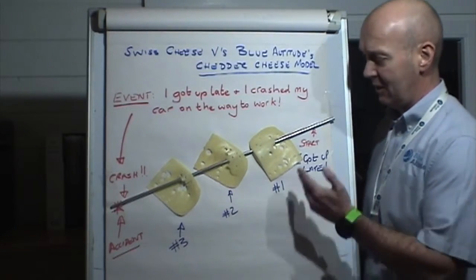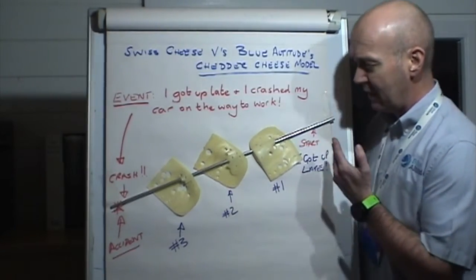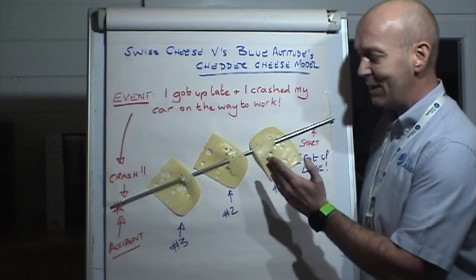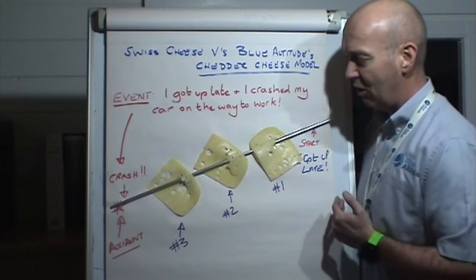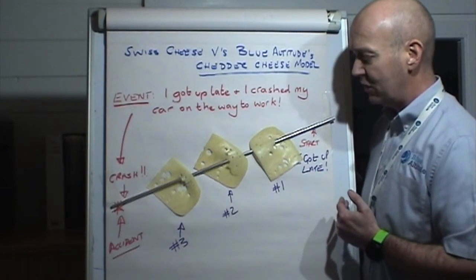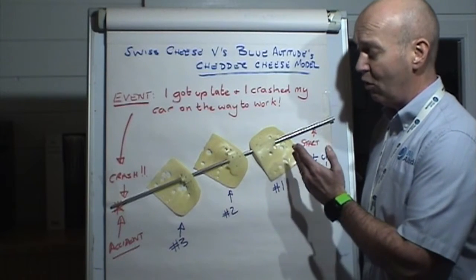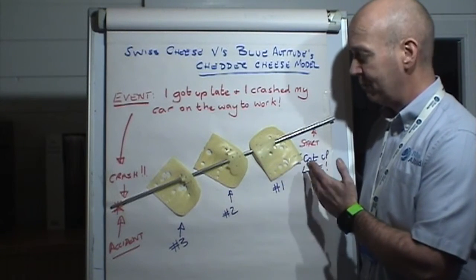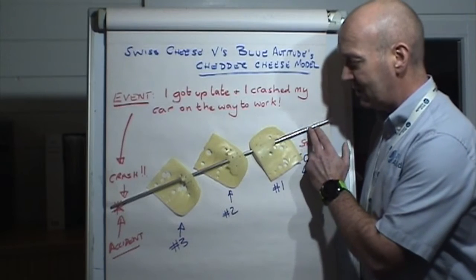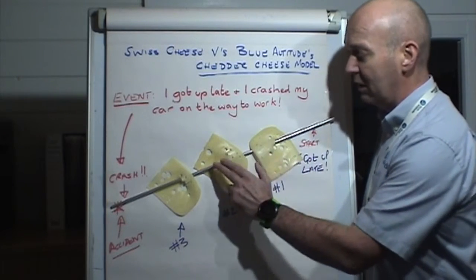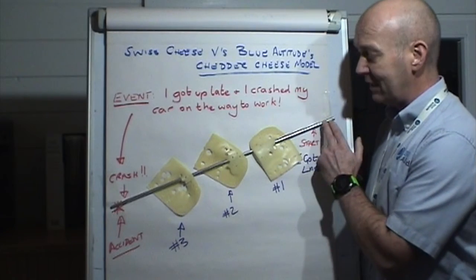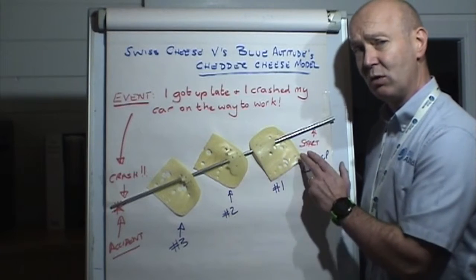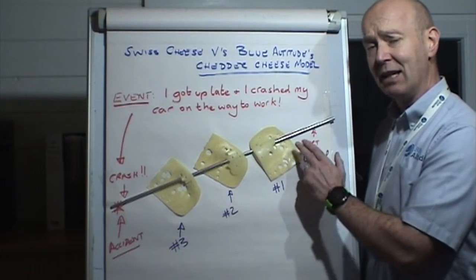If you look at the flip chart, you can see I've placed three pieces of Swiss cheese. Each piece has a hole in it. I'm using a steel pole to show that all the holes in each piece of Swiss cheese have been aligned.